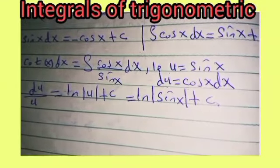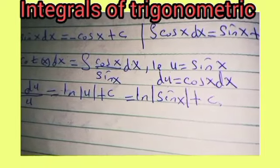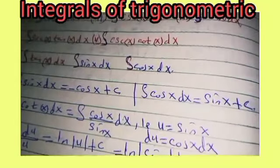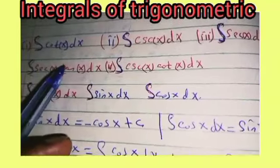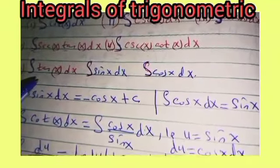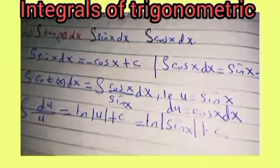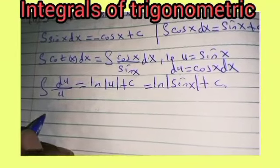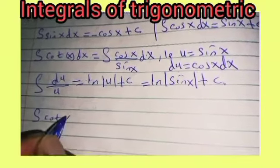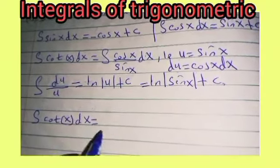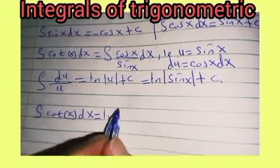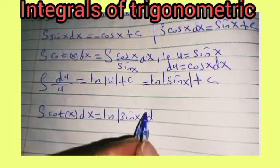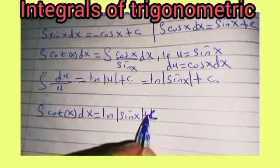Which is equal to the natural logarithm of |sin of x| plus constant c. When you look at the mathematical table for the integrals, you are going to get this result indirectly. But it is important that you know the process so that you don't have to cram — sometimes you may forget. So if you know this process, you can easily derive it yourself. The integral of cot of x dx is given by the natural logarithm of |sin of x| plus constant c.